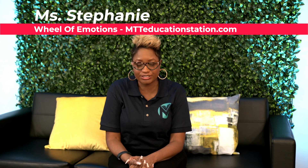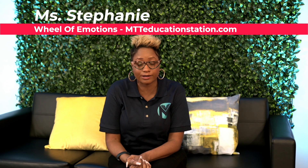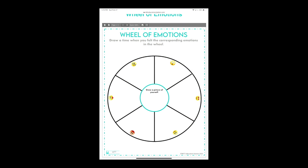Hi, it's Stephanie again. I'm back to show you one of our amazing resources. We're going to talk about the Wheel of Emotions. In this resource, you can draw a picture or work with your child on drawing a picture of when you felt all of these different types of emotions — we have sad, excited, loved, happy, angry, annoyed, or even silly.